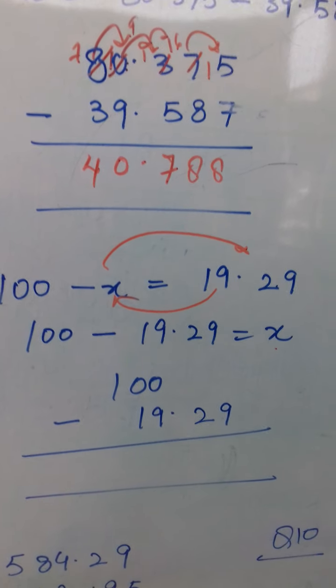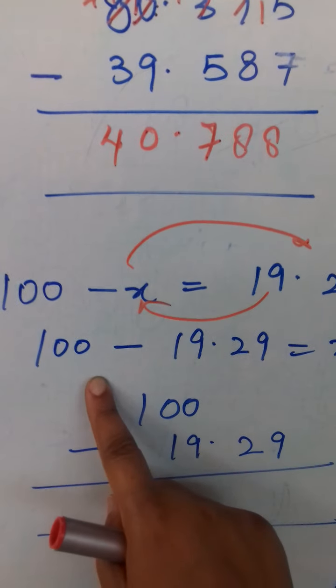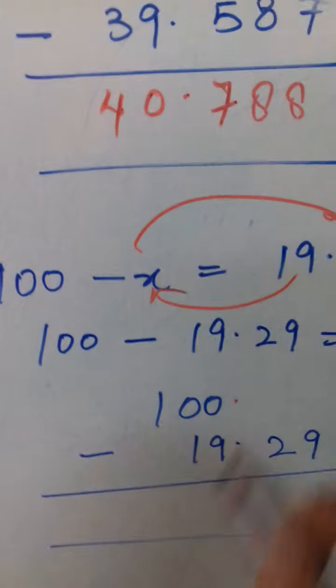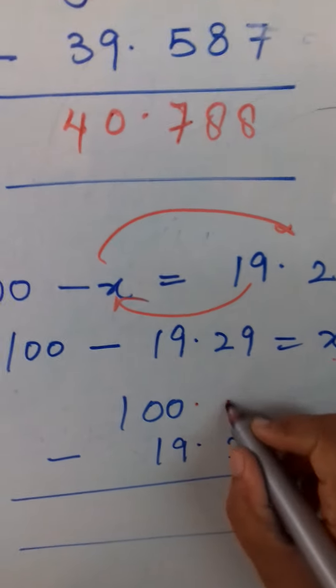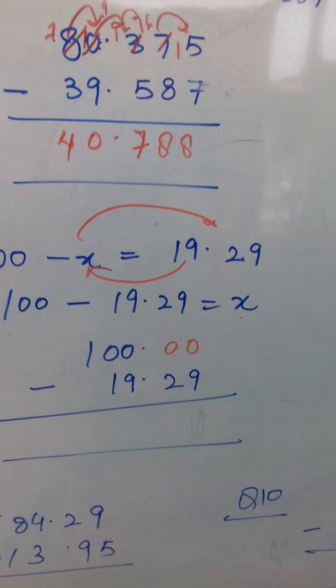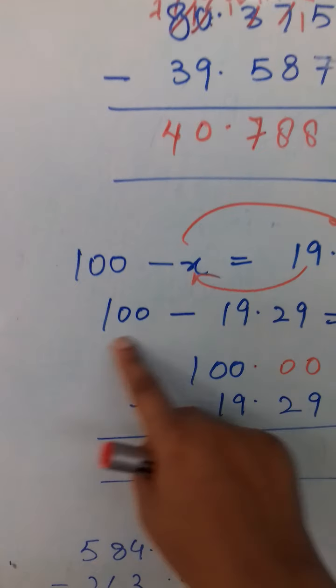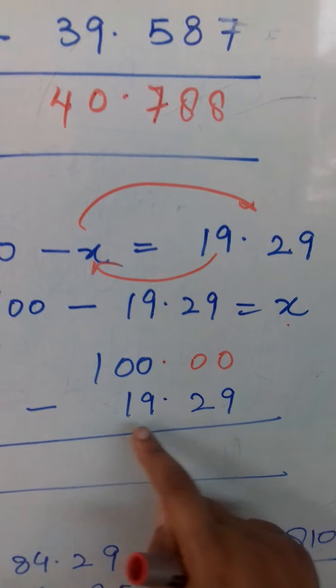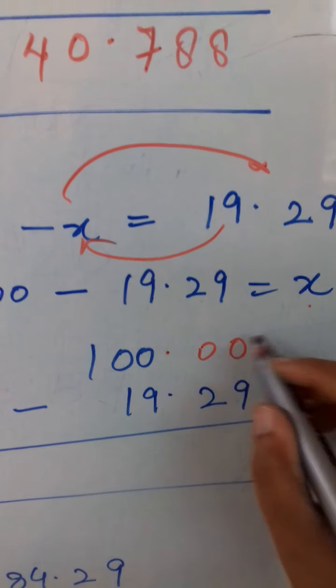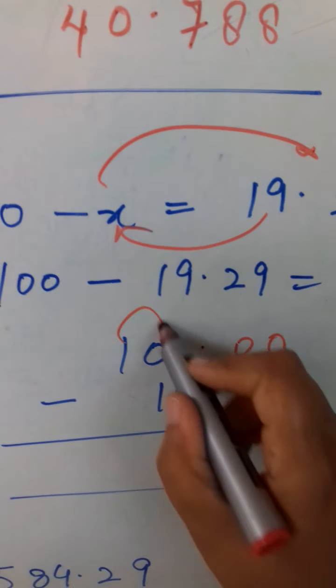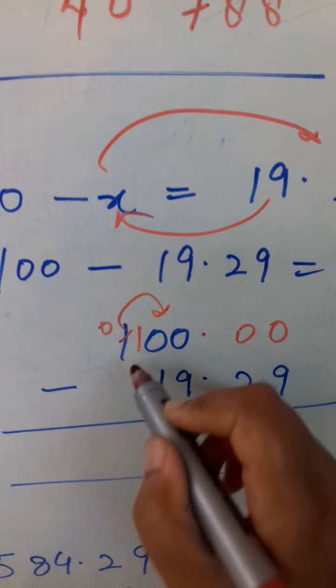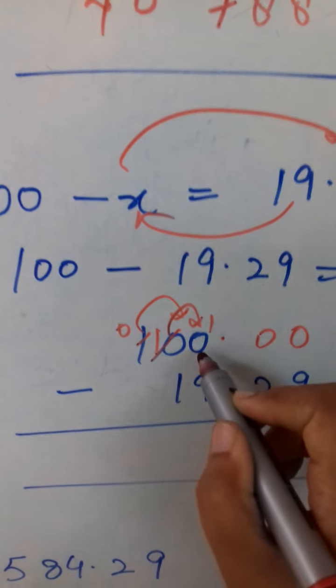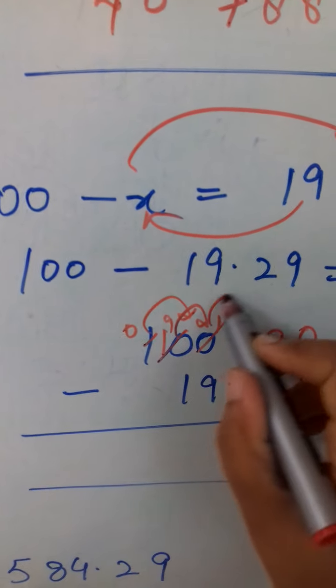So 100 minus this. And can you see there is no decimal over here, so we will put 0 at the remaining places. Because when there is none, we will put it at the end. So 100.00 minus 19.29. Now again, how to subtract this? Now from here it will take, so 0 will be left. So 10, and 10 will give to this again 10. 9 here, and this will give it to here.